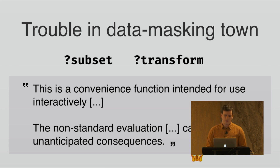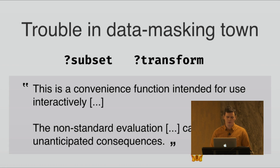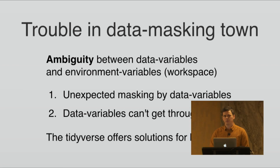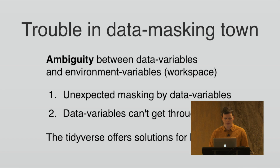So what was the reason that development of data masking slowed down in base R? I think we can find the answer in the documentation for subset and transform. You will see a warning that they are really convenience functions intended for use interactively, and that non-standard evaluation can have unanticipated consequences. That's about the ambiguity between data variables — variables in your data frame — and environment variables, those in your workspace assigned with the arrow operator. This ambiguity causes two different problems. First, you can get unexpected masking from data variables. Second, data variables cannot get through function arguments, making it difficult to create functions around data masking functions.